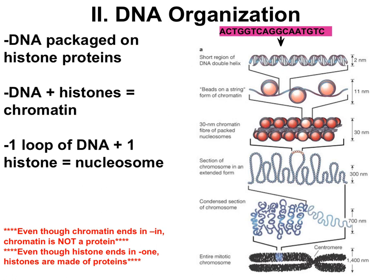So the DNA really needs to be packed up, but still be organized so that the cell can copy the DNA and make RNA copies during protein synthesis. To help pack and organize the DNA, DNA is wrapped around protein complexes called histones, shown here as pink structures. When you talk about DNA and its associated histones, collectively those two together are called chromatin. Each individual unit of the chromatin is called a nucleosome — the DNA wrapped a couple of times around the histone protein complex.